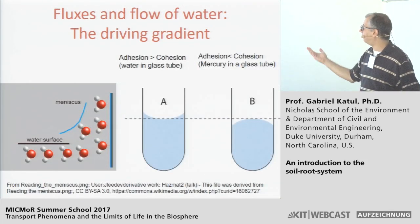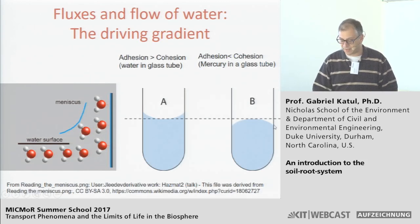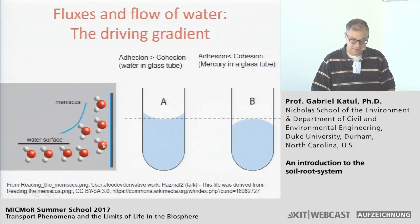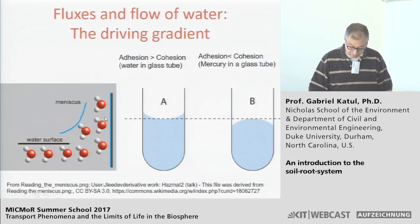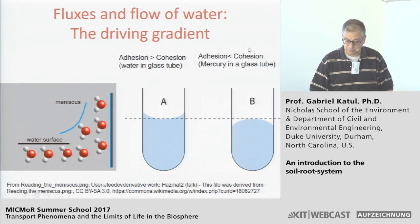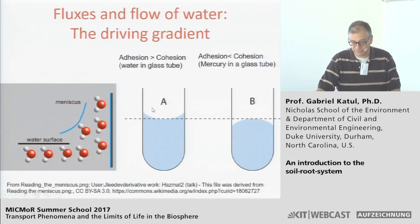Whether the meniscus is concave up or down reflects which force is stronger: adhesion or cohesion. In water in a glass tube, adhesion exceeds cohesion, so water molecules attach to the solid surface and the meniscus curves upward. In mercury in a tube, cohesion exceeds adhesion, so molecules are repelled from the surface and the meniscus curves downward. The adhesion-cohesion arguments simply dictate the meniscus shape.